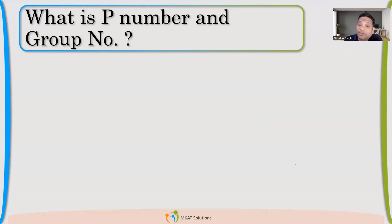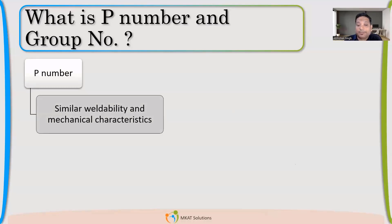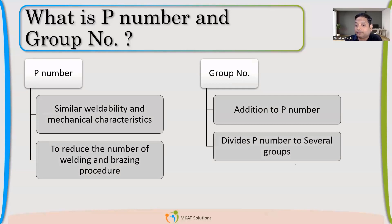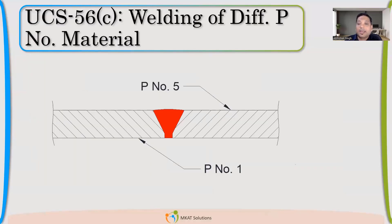For impact, we also need to see what is the group number. So basically, P number is similar weldability to the purpose is to reduce the WPS qualification. Group number is additional number given further to the group and mainly to take care of the impact testing requirement.